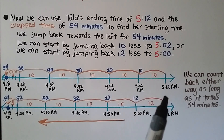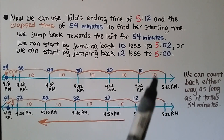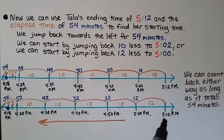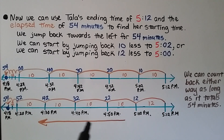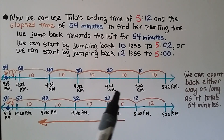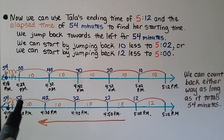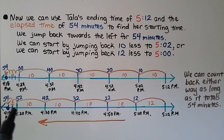Because we jumped back by tens from 5:12, our minutes always end in 2. Alternatively, we can immediately jump back 12 minutes to go directly to 5:00, then jump back by tens — 10 more is 22 minutes, 10 more is 32, 10 more is 42, 10 more is 52 — then count back 53, 54, landing at 4:18 p.m. We can count back either way as long as it totals 54 minutes.